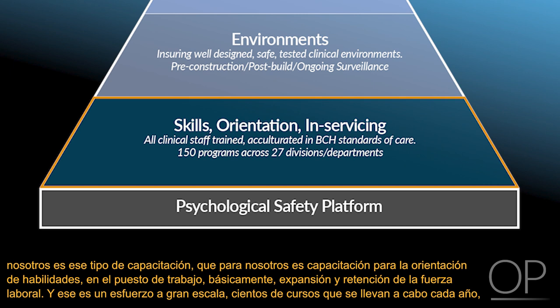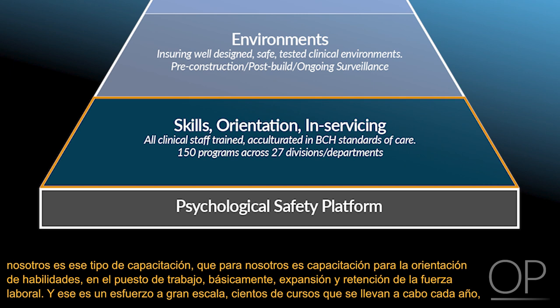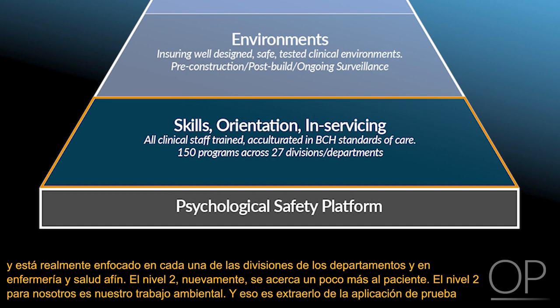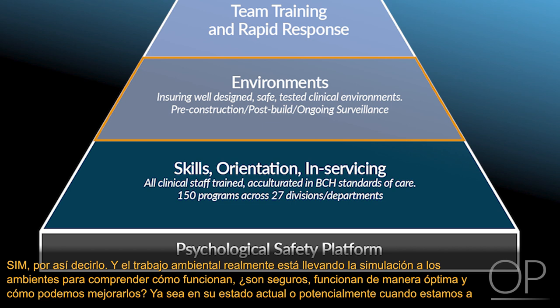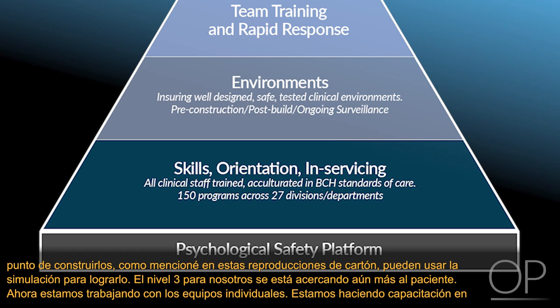Level one for us is training — skills, orientation training, in-servicing, basically workforce expansion and retention. That's a large-scale effort — hundreds of courses running each year — focused on each of the departments, divisions, nursing, and allied health. Level two, approaching the patient a little closer, is our environmental work, pulling from the SimTest application. The environmental work is bringing simulation into environments to understand how they work: are they safe, do they work optimally, and how can we improve them — either in their current state or as we're about to build them, using cardboard reproductions.